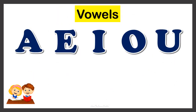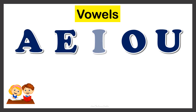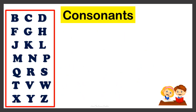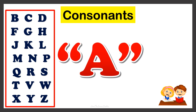Now let's understand the usage of the articles A and AN. Whenever the noun starts with the vowels A, E, I, O or U, we use the article AN. AN is used in front of the noun word which starts with the vowels. So what about the noun that starts with a consonant? Whenever a noun starts with a consonant, we use the article A. A is used in front of the noun that starts with a consonant.